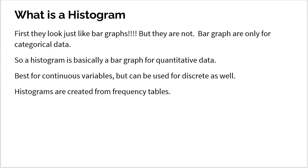Histograms do look like bar graphs, but they are not. Please keep in mind, bar graphs are only for categorical data. So if you see bars representing how many people like blue, how many people have blonde hair, or how many people said yes or no to a vote, that's called a bar graph. But the moment the bars represent counts of quantitative data, that's what's called a histogram. They're best for continuous variables, but they can be used for discrete as well.